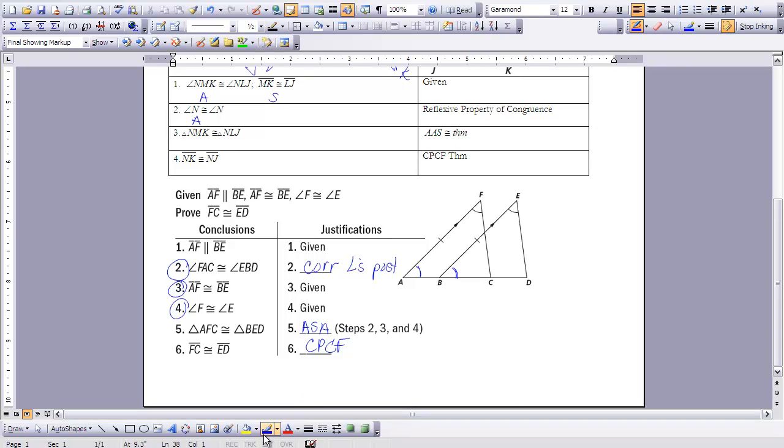7-4. When you get to class, we'll do several more proofs, pulling apart triangles and proving their triangles congruent and then their parts congruent.